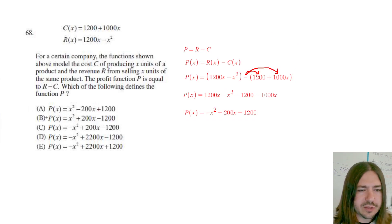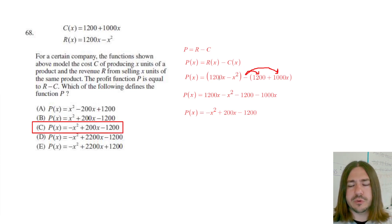And let's see which answer choice it is. Negative X squared plus 200X minus 1200. Our answer choice is C here. So the basic idea is you're just going to substitute R and C with their respective equations, simplify, and rewrite it in standard form. Not much to this one.